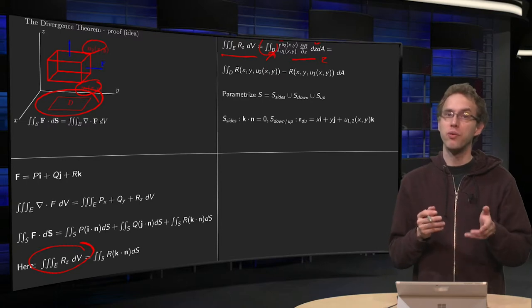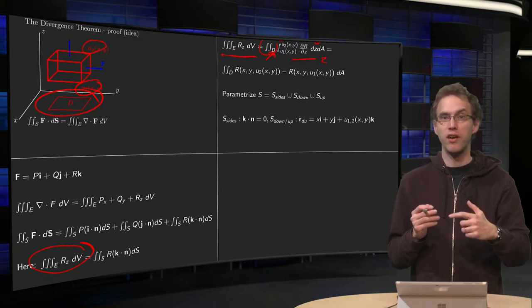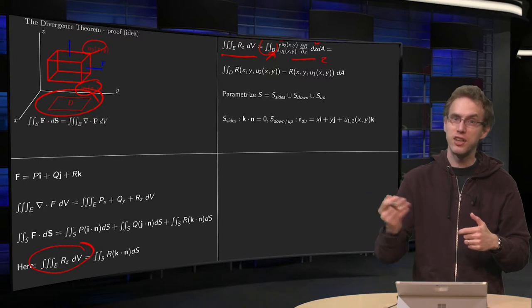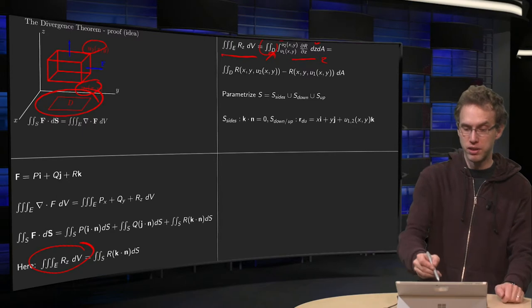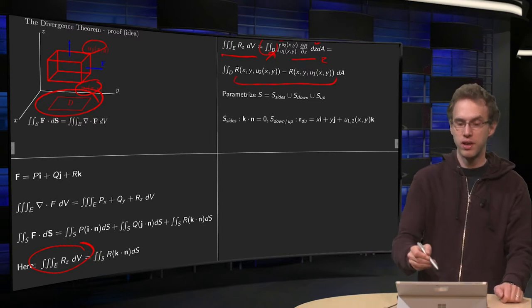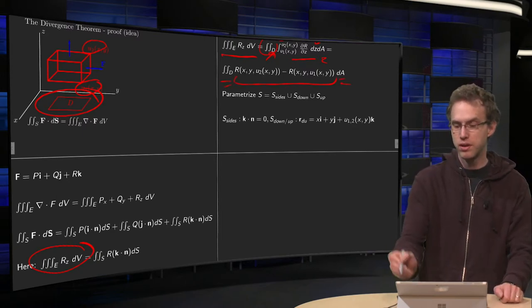Now, what do we have to do? We have to differentiate R with respect to Z and then integrate, so that cancels out. So we get R in the upper boundary minus R in the lower boundary. So that's a Z integral, and we just leave the other integrals.